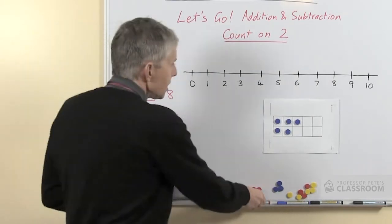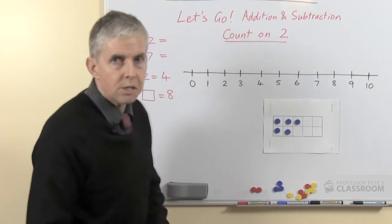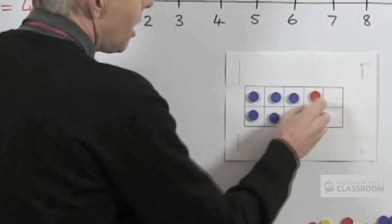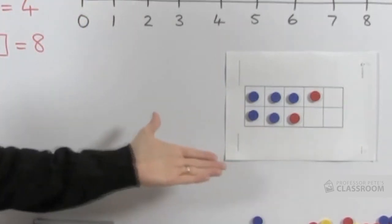With the 10 frame let's look at that, so if we had 5 plus 2, the same example using the 10 frame, we put out 5 counters and to start with we would say right now put out another 2 counters, how many do we have now?